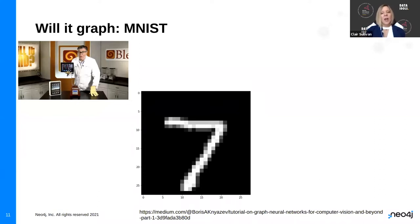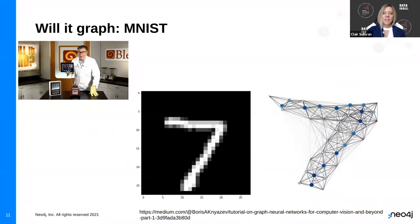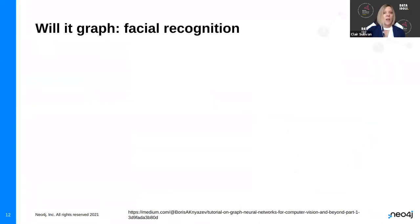Will it graph? For those of you familiar with 'will it blend?' — will it graph? A lot of us are familiar with the classic MNIST problem of identifying handwritten numbers. Will that graph? The answer is yes. Somebody has actually turned this into a graph — you can see how they took that image, found all these high points within it, and turned it into a series of nodes and relationships. And facial recognition — will it graph? Of course it will graph. We can look at the face as a series of nodes at all kinds of different resolutions.